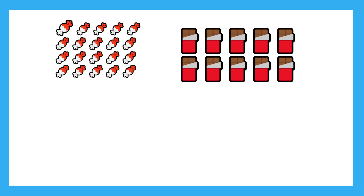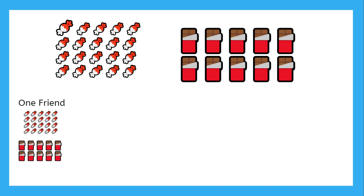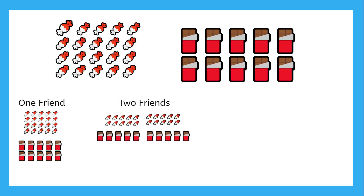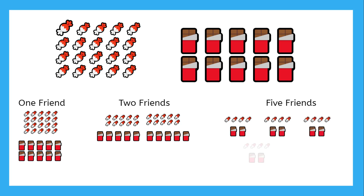Well, if Sam had just one friend, she would get all 20 candies and 10 chocolate bars. What if Sam had two friends? Each friend could get 10 candies and 5 chocolate bars. Now, what if Sam had 5 friends? Each friend would get 4 candies and 2 chocolate bars.